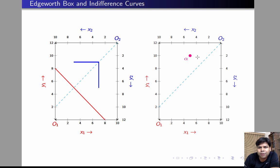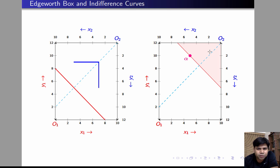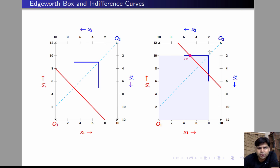So we are going to pick a point randomly from the region above the 45-degree line, let's say alpha, and we would like to inspect whether this point is efficient or not. First we'll plot the indifference curve of individual 1 through this point, and this is how it's going to look. All the allocations that lie above this indifference curve are strictly preferred by individual 1 over alpha. Now let us plot the indifference curve of individual 2 through alpha. These are the points which are strictly preferred by individual 2 in comparison to alpha. So clearly there is a region here — if we move in this direction anywhere in this triangle, we will necessarily be improving the welfare of one without reducing the welfare of the other.